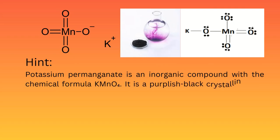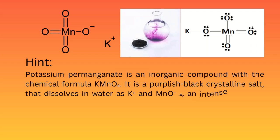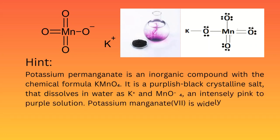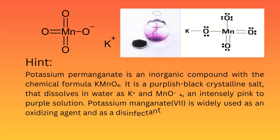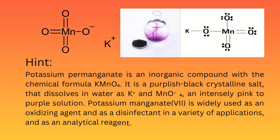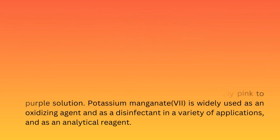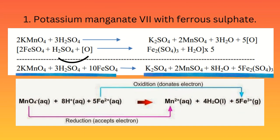Hint: Potassium permanganate is an inorganic compound with the chemical formula KMnO4. It is a purplish-black crystalline salt that dissolves in water as potassium ion (K+) and permanganate ion (MnO4−), forming an intensely pink-to-purple solution. Potassium permanganate is widely used as an oxidizing agent, as a disinfectant in a variety of applications, and as an analytical reagent.